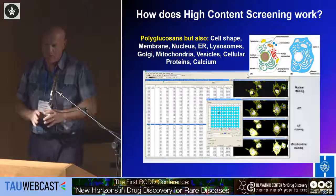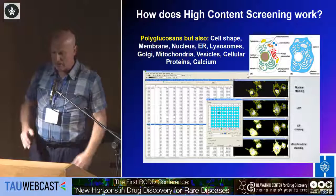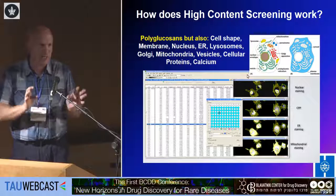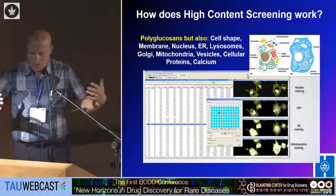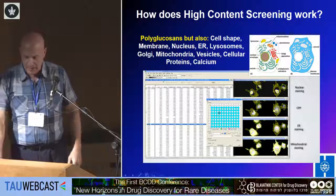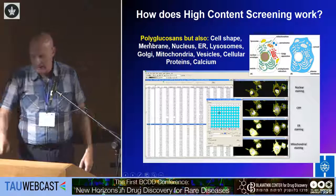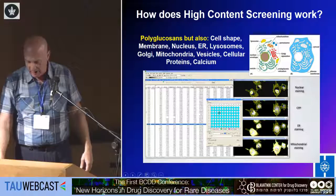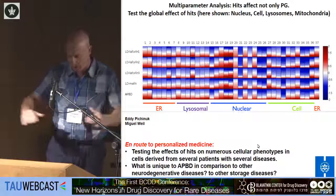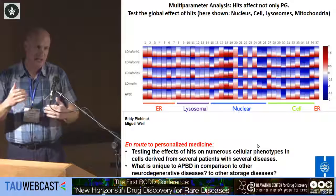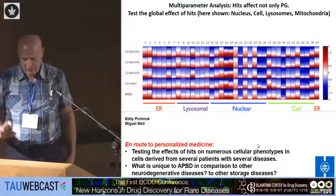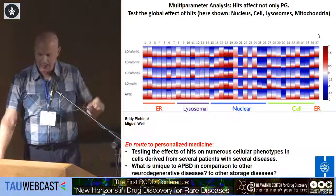This is an example of a drug developed by HTS. Now I want to move on to how we can personalize these drugs. In the Blavatnik Center in Miguel's lab, they do high-content screening. How does it work? For instance, in APBD, the assay looks for polyglucosans but also many other cell features — all of them: cell shape, membrane, nucleus, ER, as you can see here. It's not only the pathogenic factor we look at; we look at the entire plethora of cell features analyzable by imaging. It's a multi-parametric analysis.